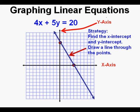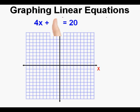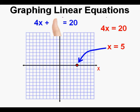We solve for the x-intercept by covering up the y-term — I like using my thumb. With the thumb covering the y-term, we have 4x equals 20. All we do to solve for the x-intercept is calculate x by dividing 20 by the coefficient of x, which is 4, so the x-intercept is 5. We mark the point on the x-axis.